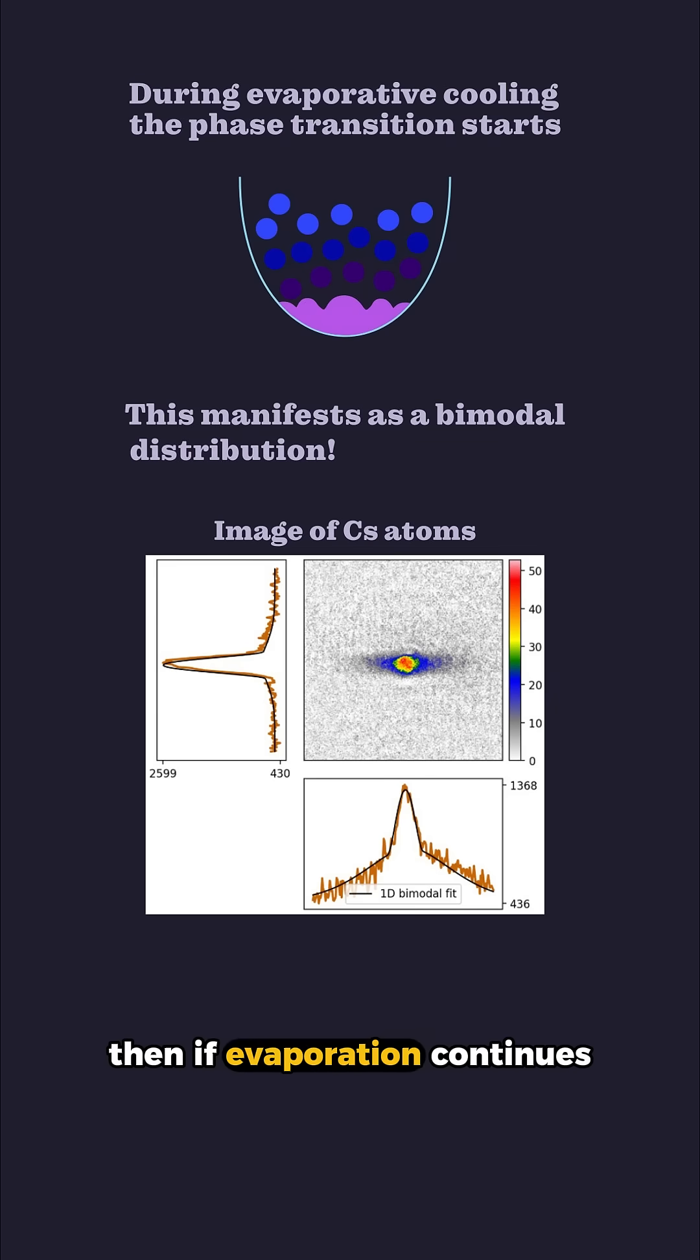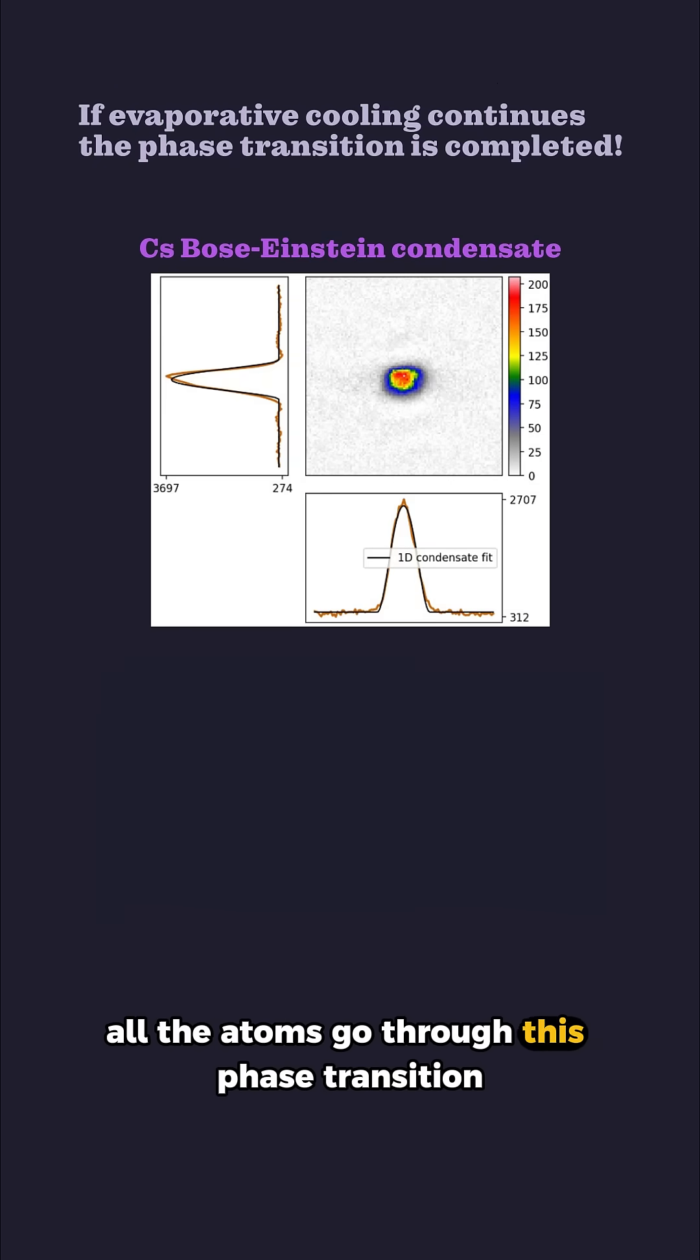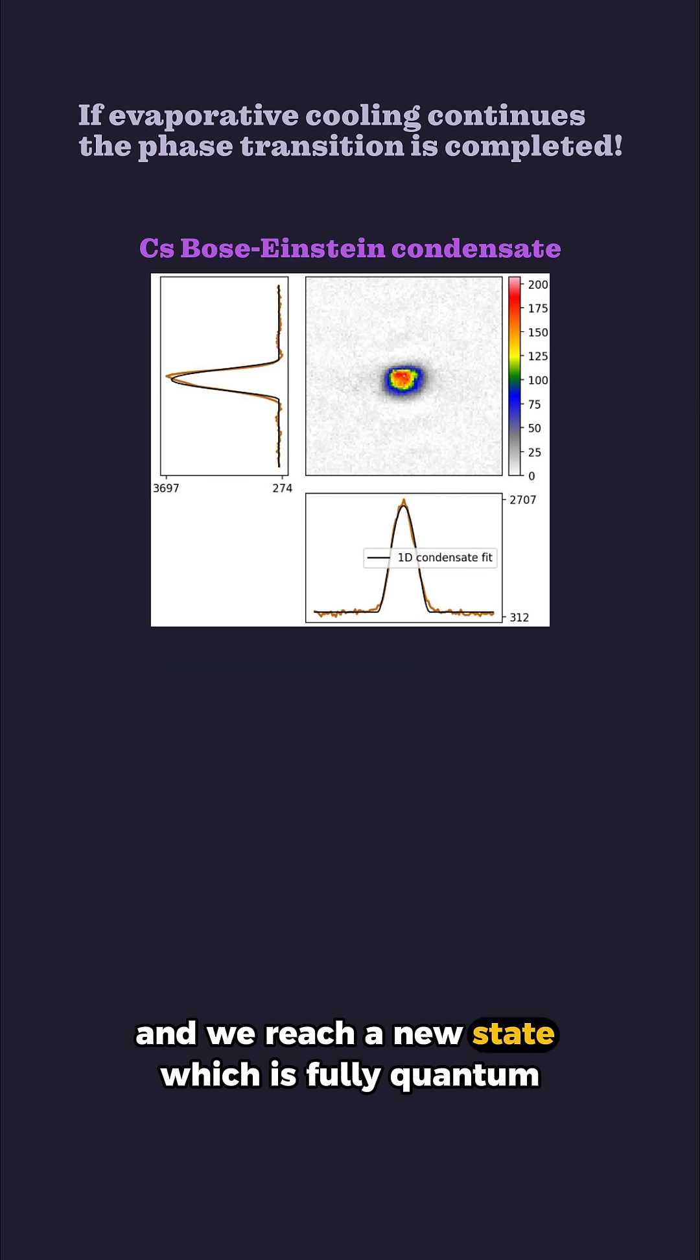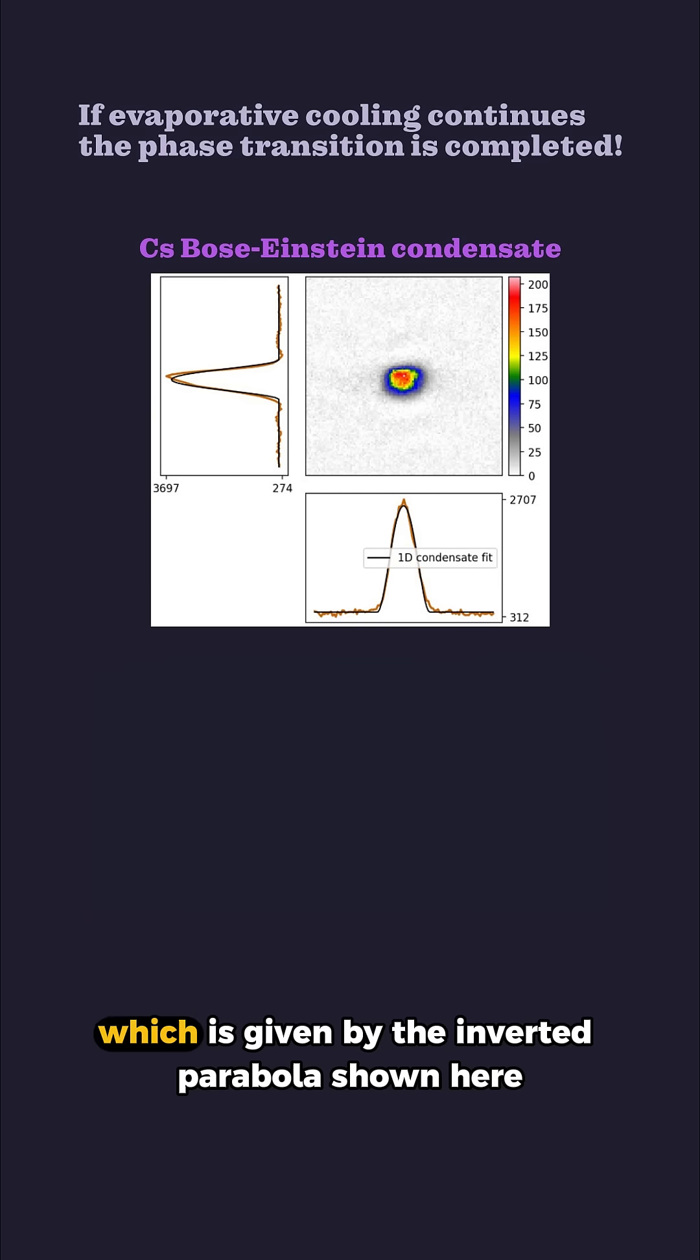Then, if evaporation continues, all the atoms go through this phase transition and we reach a new state, which is fully quantum, which is called the Bose-Einstein condensate, which is given by the inverted parabola shown here.